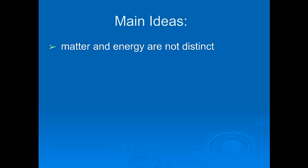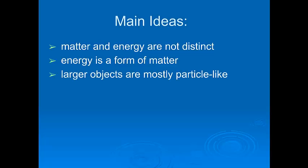So the main ideas here that we have are that matter and energy are not distinct. They're actually the same thing. Energy is just a form of matter. Larger objects behave more like particles. Smaller objects, like electrons, behave mostly like waves. And that's a really important distinction and a very important part of where we're going next.